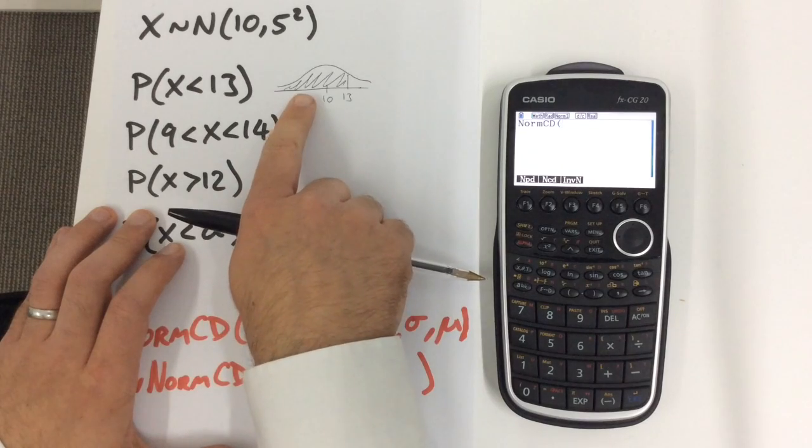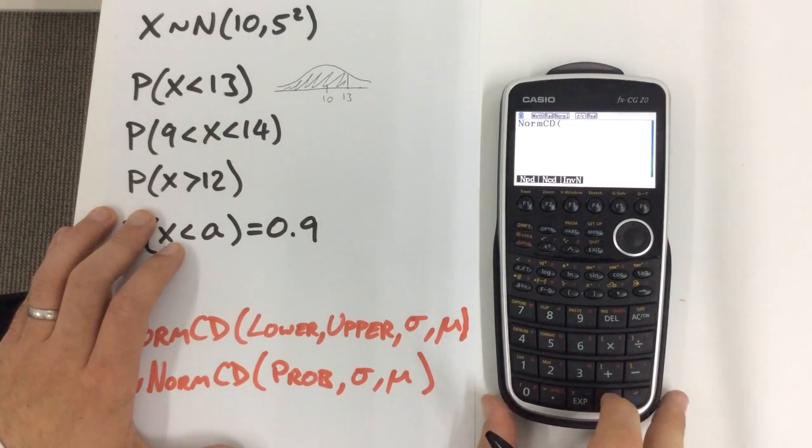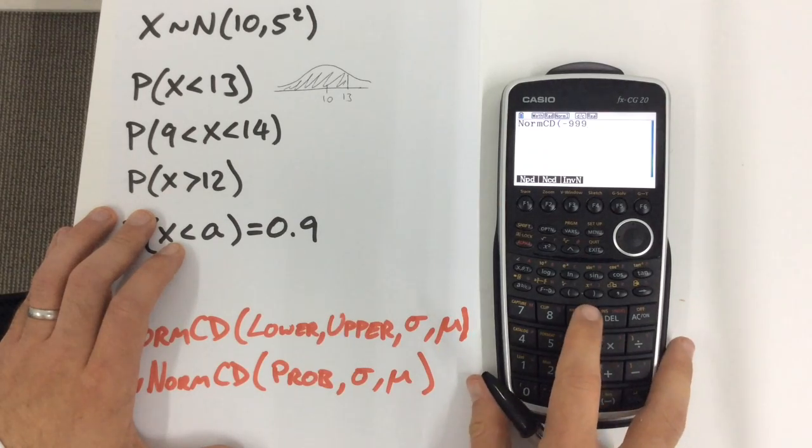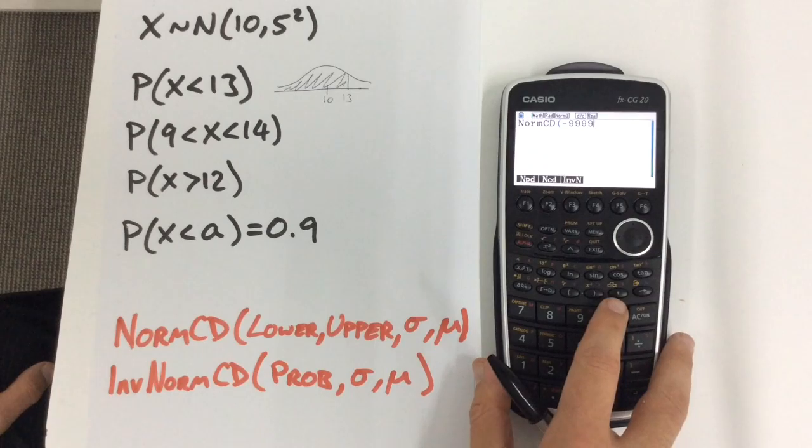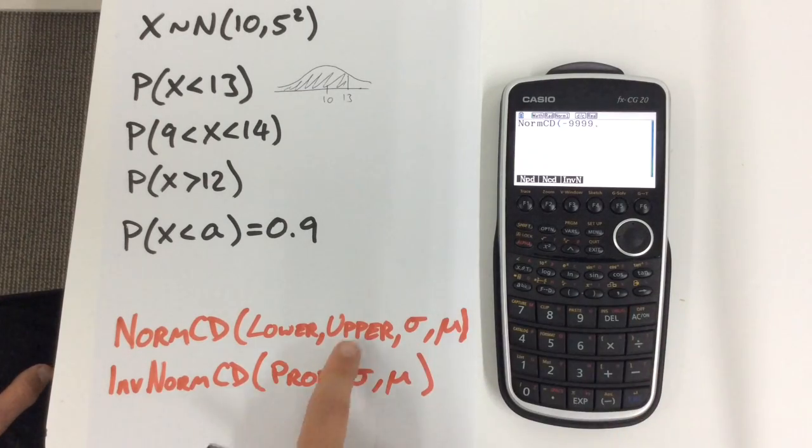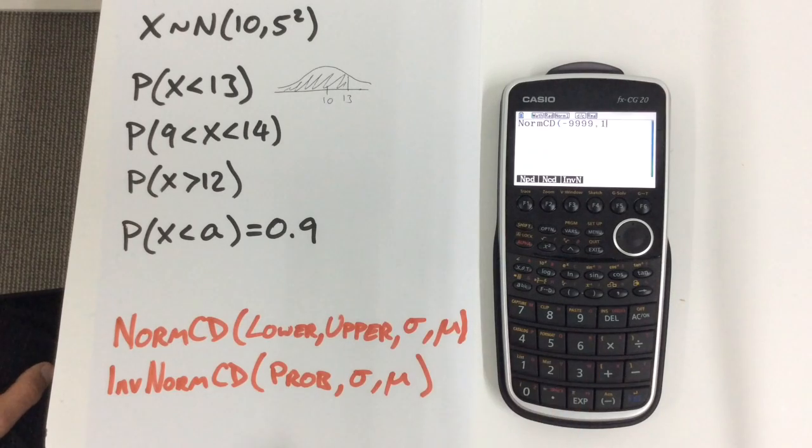Of course the graph carries on to negative infinity, so for our lower bound I'm just going to put a very large negative number like -999. Pressing the comma button, I'm going to put my upper bound. My upper bound of the section I want is 13.